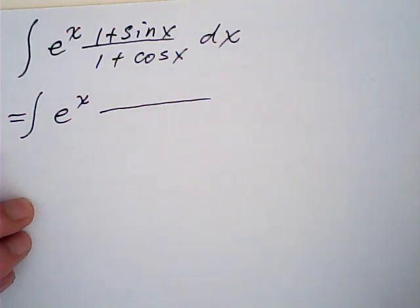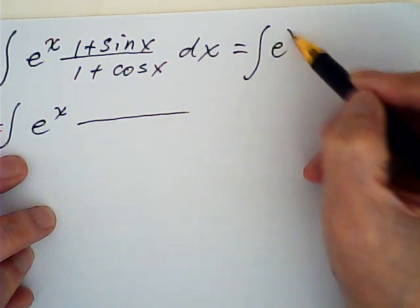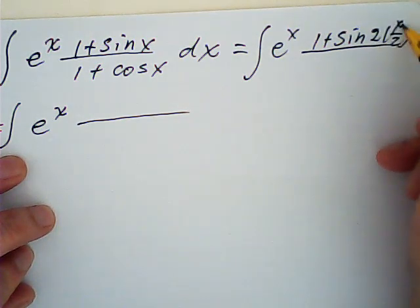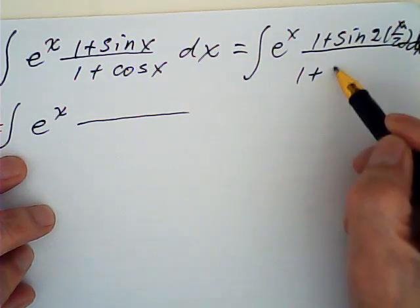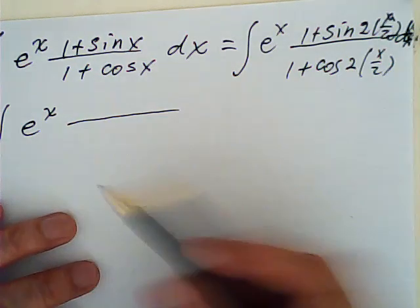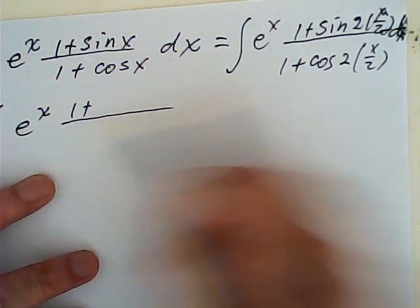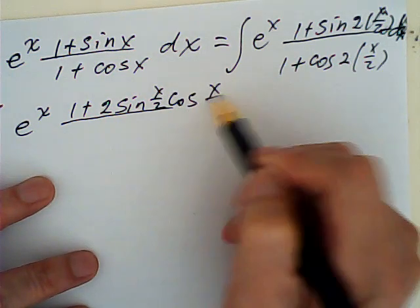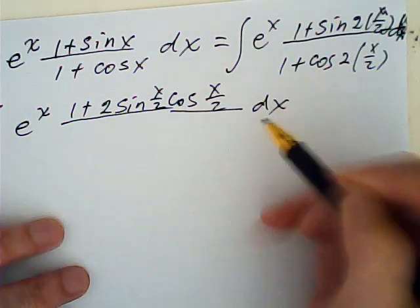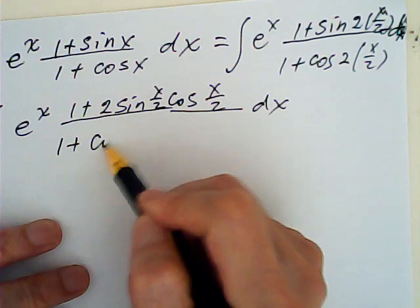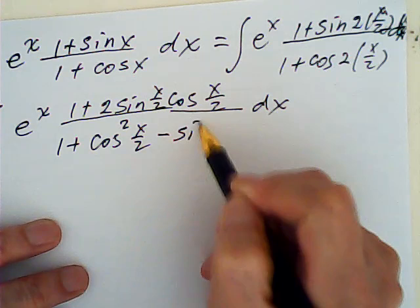Let me save space up here. There's a rule here: e to the x. I can write this as one plus sine two half x dx. This is one plus cosine two half x. So I can use the formula for the double angle. This will be one plus sine two, as well as two sine half x and cosine half x, and plus cosine two half x, which will be equal to cosine squared half x minus sine squared half x.